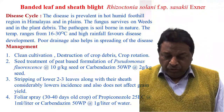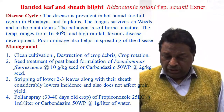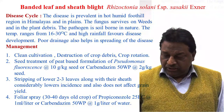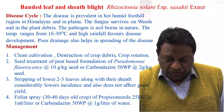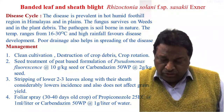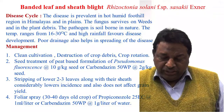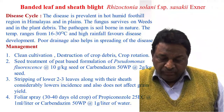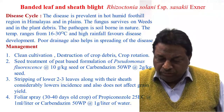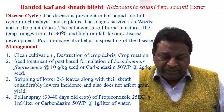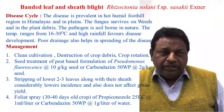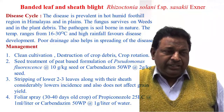Stripping off the lower 2 or 3 leaves along with their sheaths considerably lowers disease incidence and does not affect grain yield.